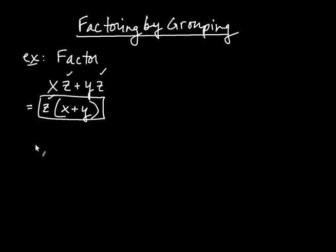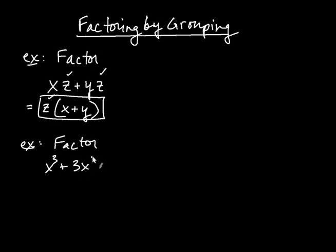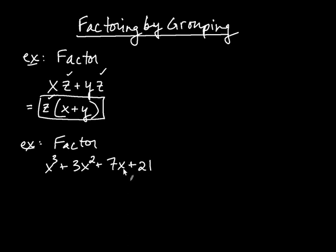Now what we're going to do when we factor by grouping is make use of that same logic. Let's say we wanted to factor x cubed plus 3x squared plus 7x plus 21. If you look at these, you might think to yourself: you have four terms, but they don't have anything in common. The first three terms have an x, but not the last one. And only the last two terms have a factor of 7 in common. So these four terms don't have any factor in common.